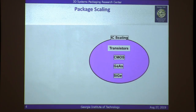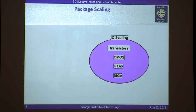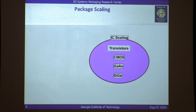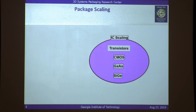So what exactly is package scaling? If you take an IC with transistors built using different kinds of technologies — CMOS, gallium arsenide, silicon germanium — IC scaling means taking those transistors and making them smaller, which gives large performance benefits. This is what we call Moore's Law. But if you have to build a system, those transistors alone are not enough — that's where the package comes in.